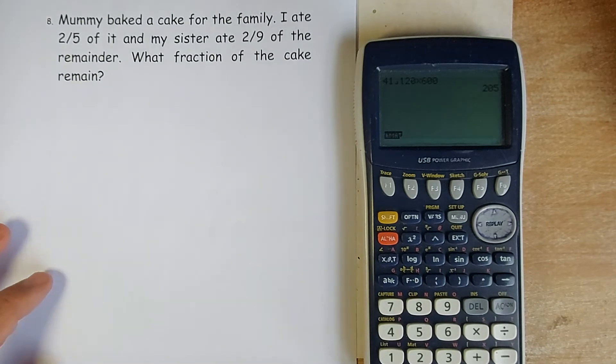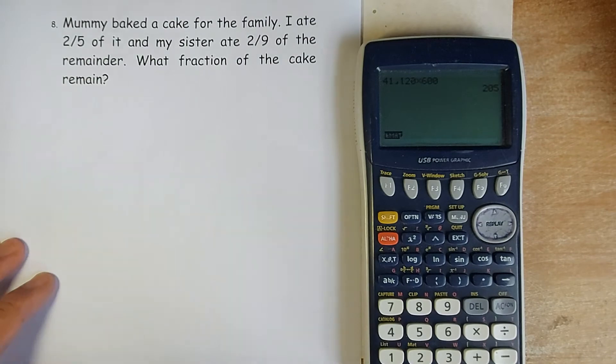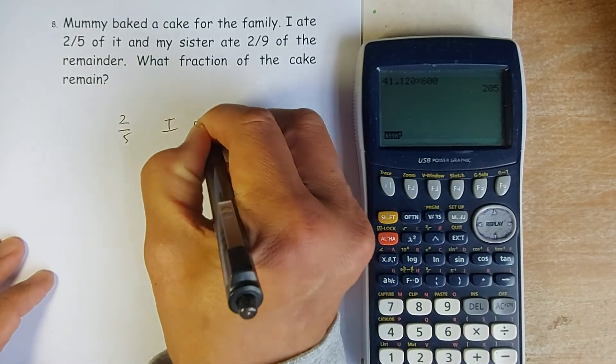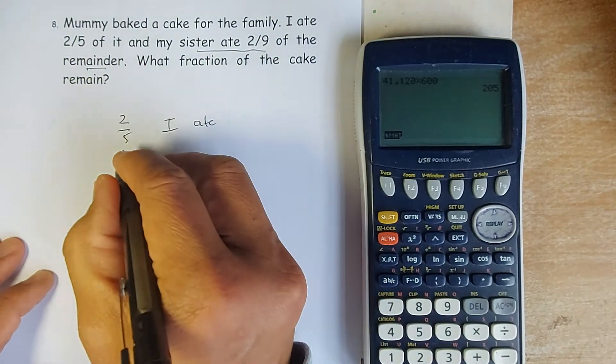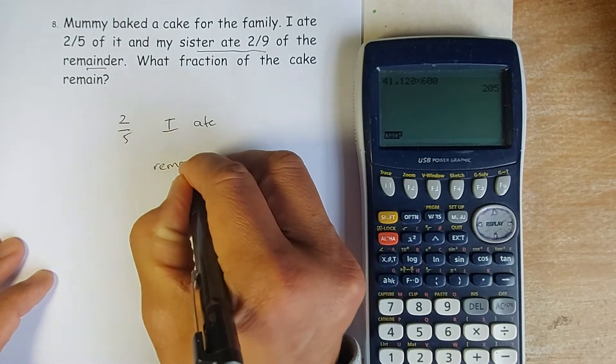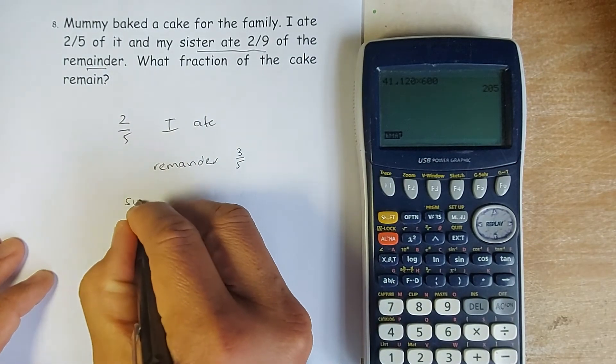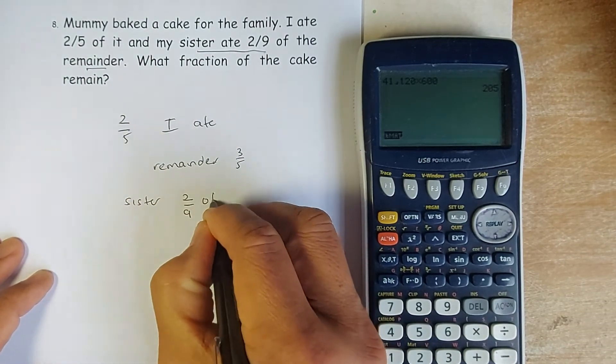The last one is a very common exam. Mummy baked a cake. So the whole cake is one whole. I ate 2 fifths. My sister ate 2/9 of the remainder. So if I ate 2 fifths, the remainder is going to be 3 fifths. The remainder of the cake will be 3 fifths. So my sister is going to eat 2/9 of 3 fifths. So 2/9 of 3 fifths again.